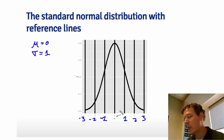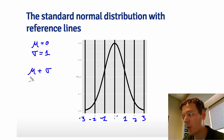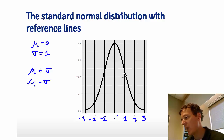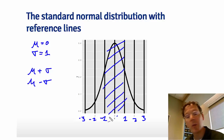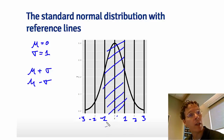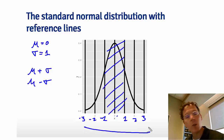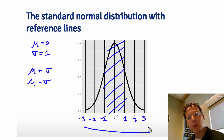For non-standard normals, statisticians revert back to the standard normal by talking about standard deviations from the mean. The probability that a non-standard normal lies between mu minus 1 sigma and mu plus 1 sigma is exactly the same as the probability of being between minus 1 and plus 1 on the standard normal. Basically all normal distributions look identical — the only thing that changes is the units along the axis. When you revert to talking about standard deviations from the mean, all probabilities revert back to standard normal calculations.